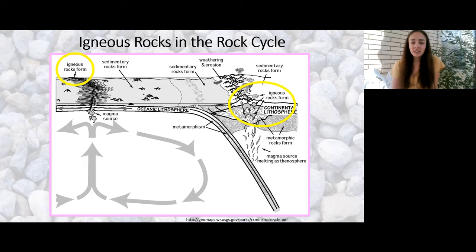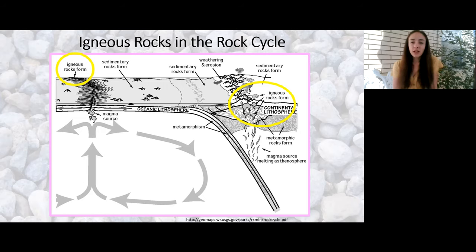These are two different scenarios. At one, you have a divergent oceanic plate boundary; at the other, you have a subduction zone where oceanic lithosphere is subducting under continental lithosphere, causing heating and melting of magma below the continental lithosphere and resulting in volcanic activity. In both scenarios, igneous rocks form from magma coming up and cooling at the surface. However, there is another important process — if you've ever seen a granite countertop, you've seen the product of this additional process.